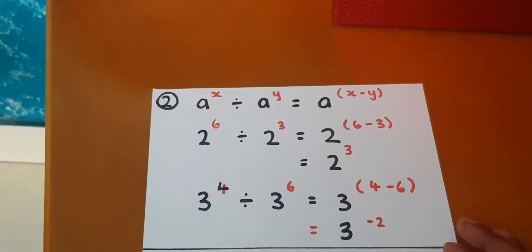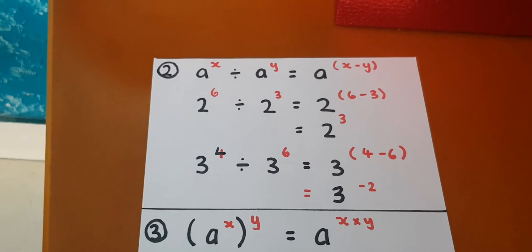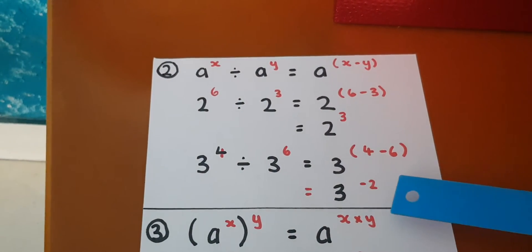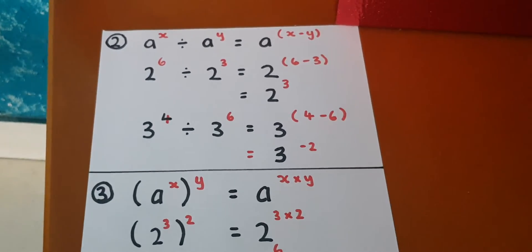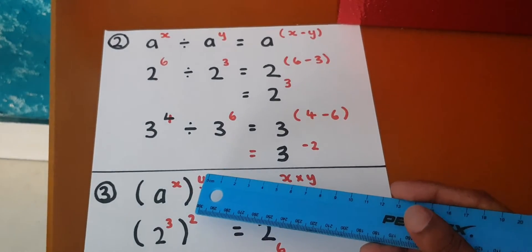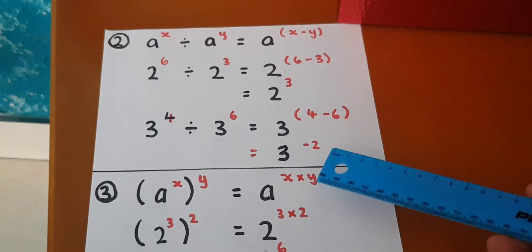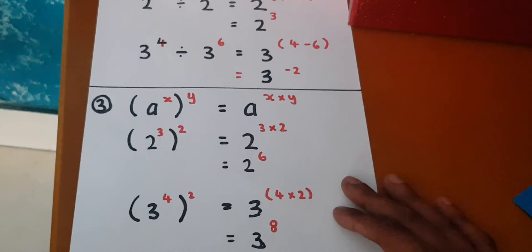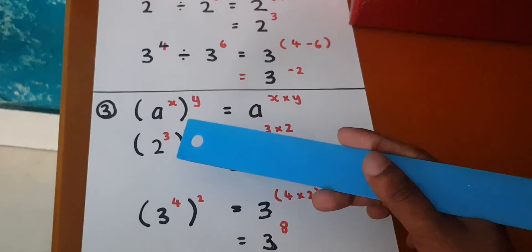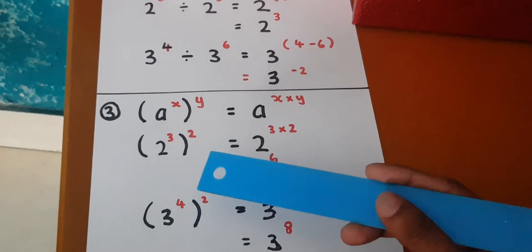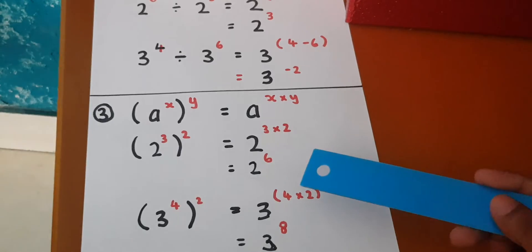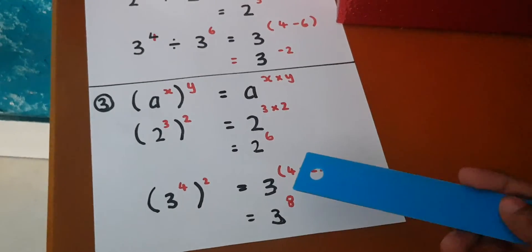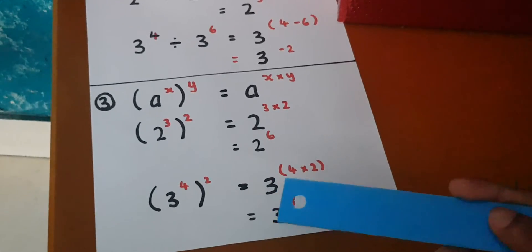The third law: a to the power x, all raised to another power y, is equal to a to the power x times y. Putting in numbers: two to the power three raised to the power two equals two to the power three times two, which is two to the power six. Another example — notice the base has changed — three to the power four raised to the power two equals three to the power four times two. The base carries across and only the power changes, so four times two equals eight, giving three to the power eight.